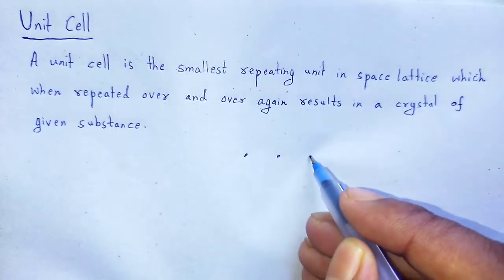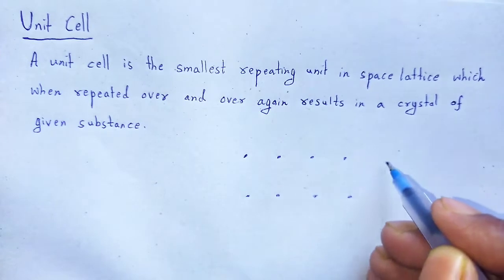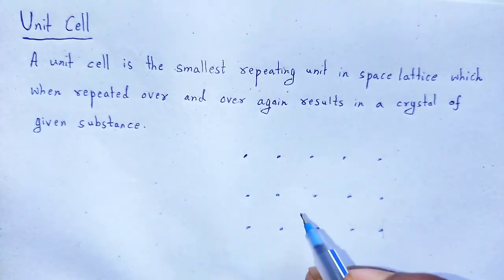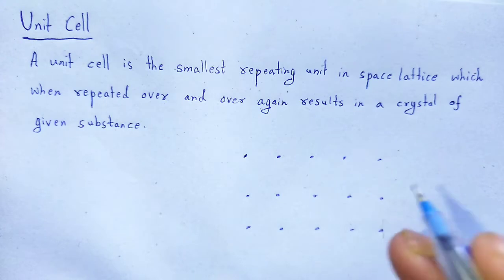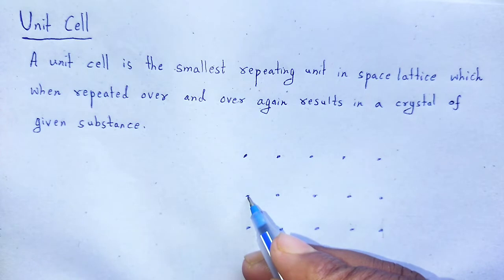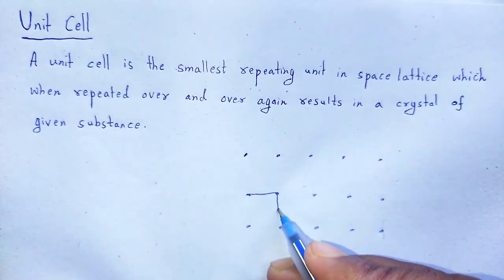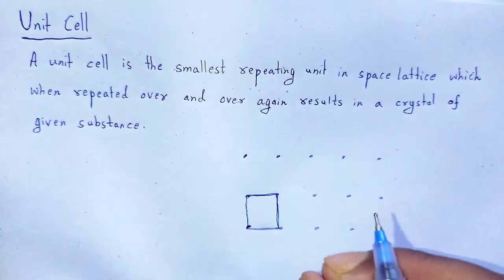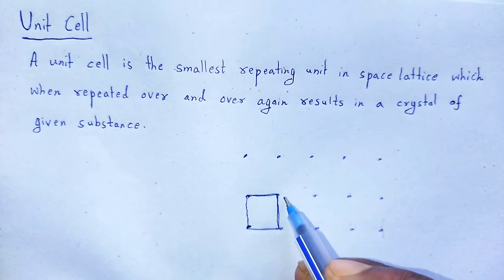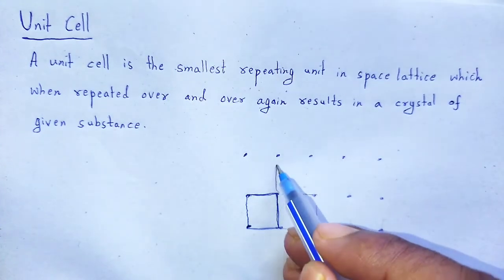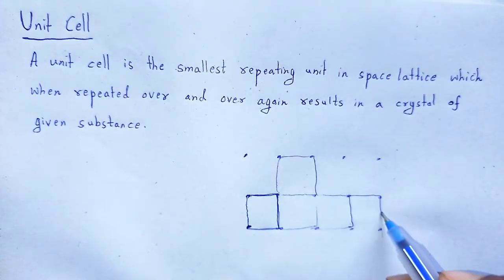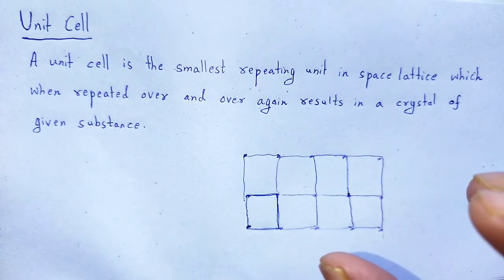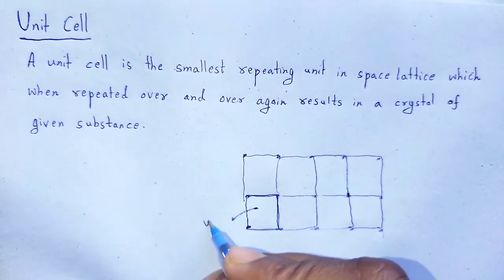If these are the lattice points in two dimensions, the smallest repeating unit — let us choose that one. If this smallest unit is again repeated, finally we have the crystal structure. This is the unit cell.